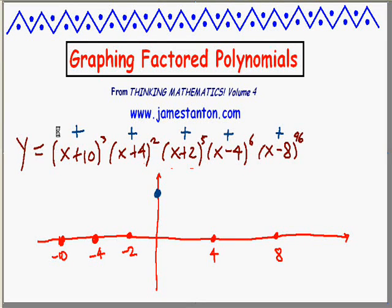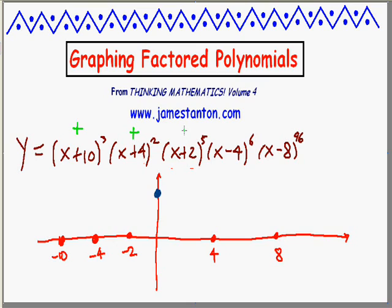Alright, that was a good trick. Can I go further? Let's try another interesting value for x — let's go to something extreme. What happens if I put x = a million into this graph? Well, this would be (a million + 10)³ — that's positive. This term would be positive, something squared is positive. (a million + 2)⁵ would be positive. (a million − 4) will be positive, especially raised to the 6th power. (a million − 8) will be positive, especially raised to the 96th power. So I'm going to get this huge positive number. So for extreme values of x, I know my graph wants to be a huge positive value. It must be going up like this.